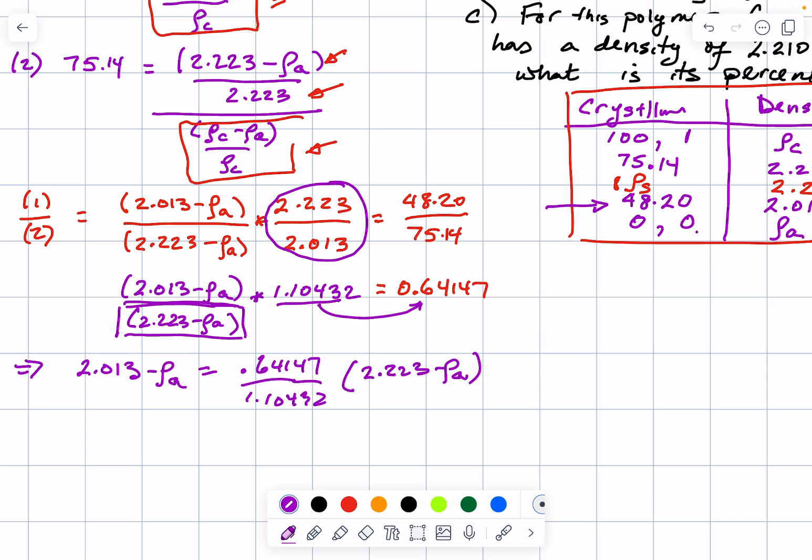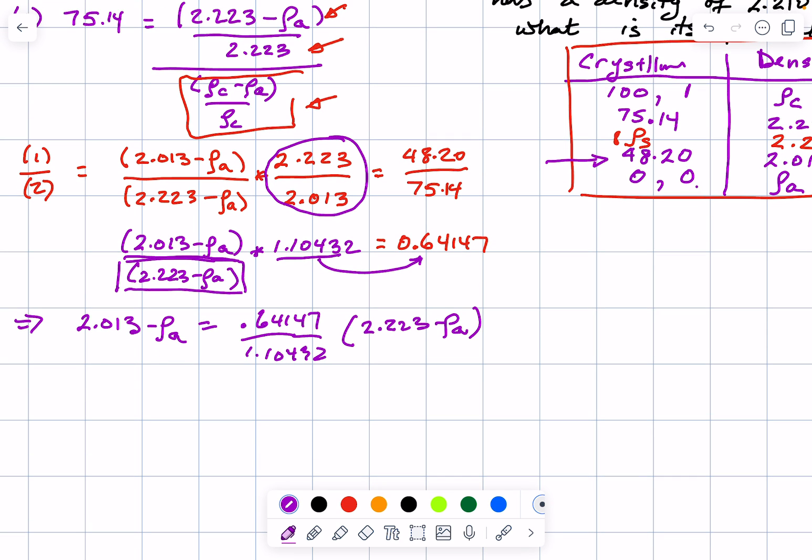If we carry these through and carefully solve for ρa, you will get ρa equals 1.6517. You want to end up with ρa on one side and all the numbers on the other side. That is the answer for this problem for the density of the amorphous state.